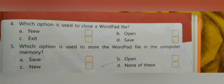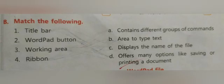Next question is match the following. First one, Title bar, you will match with number C on the right hand side, that is displays the name of the file. Number two, WordPad button, you will match with option D, offers many options like saving or printing a document.